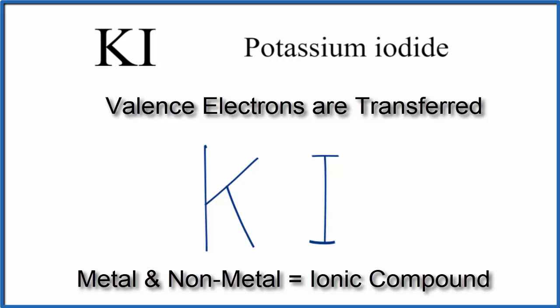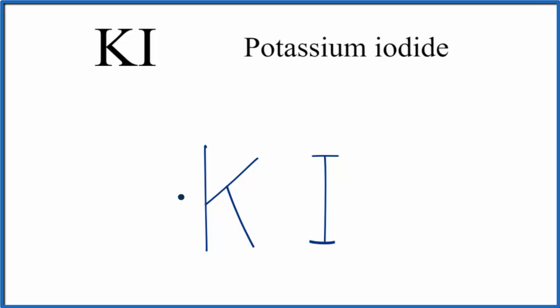Potassium is in group 1 on the periodic table, which means it has one valence electron. Iodine is in group 17, sometimes called 7A, and it has seven valence electrons.